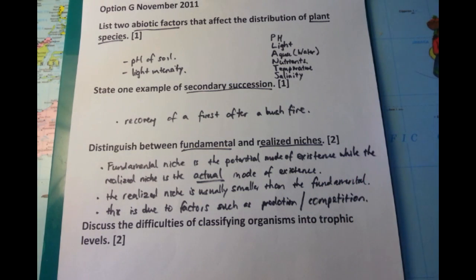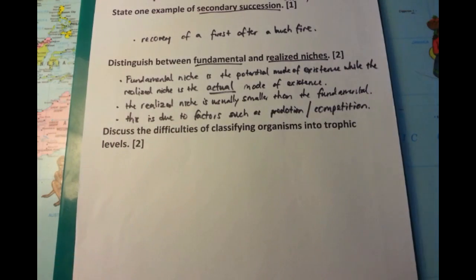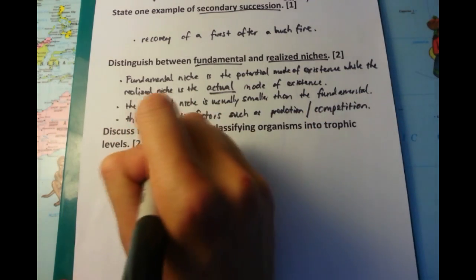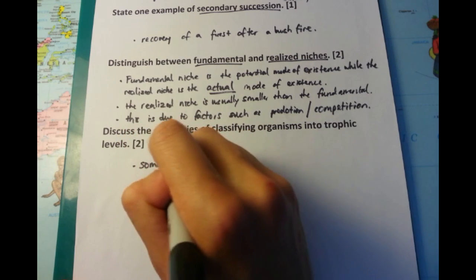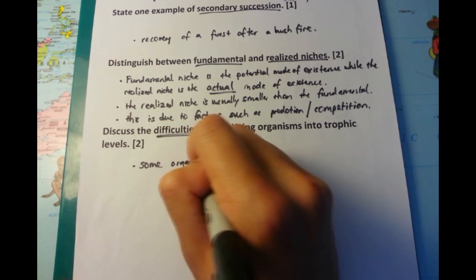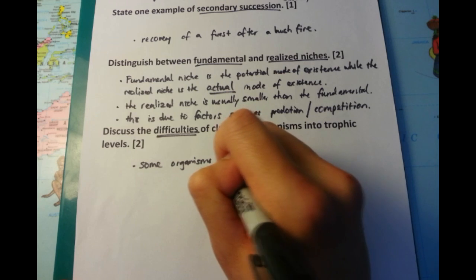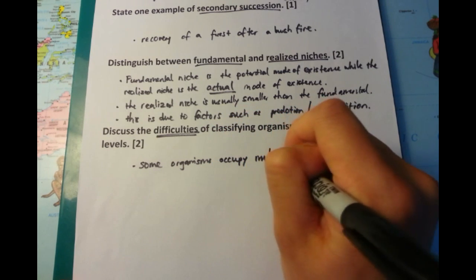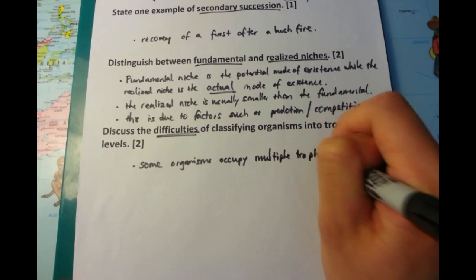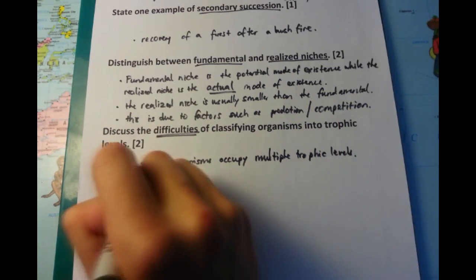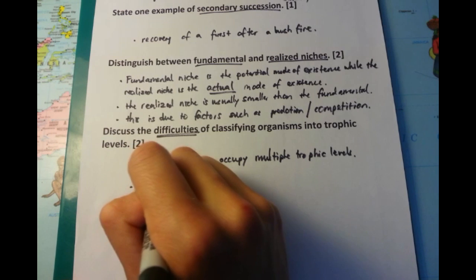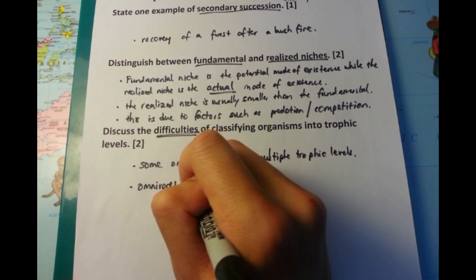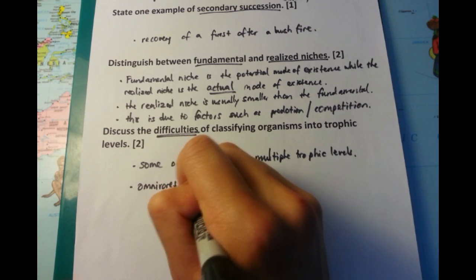The last question now. Discuss the difficulties of classifying organisms into trophic levels. And this is fairly common sense. However, the first point I'm going to talk about is the fact that some organisms occupy multiple trophic levels. So one might be a primary consumer, but it also may be a secondary, tertiary, or even quaternary consumer. And sometimes all of those are at the same time. So this concept of trophic levels can be a bit artificial in this particular sense.